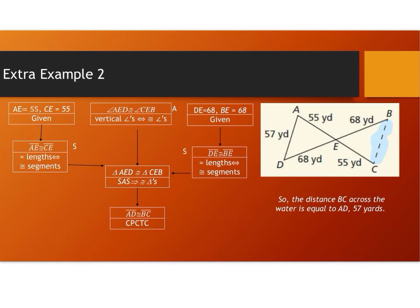Based on the proof that the two triangles are congruent, we can conclude that all other corresponding parts are congruent. So AD is congruent to BC. If AD is 57 yards, then BC is 57 yards. Our conclusion is the distance from A to D is the same as the distance from B to C, which is 57 yards.